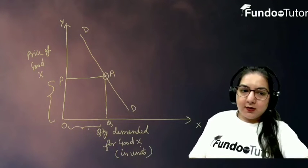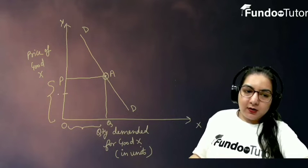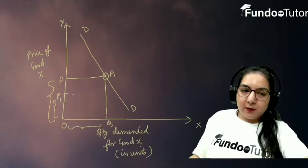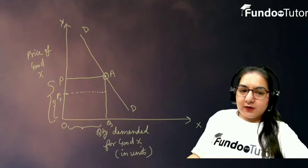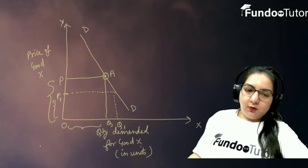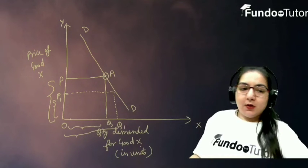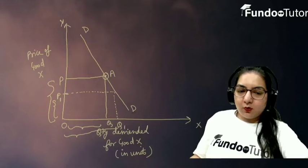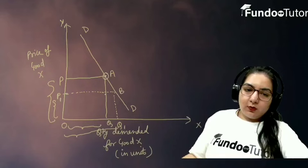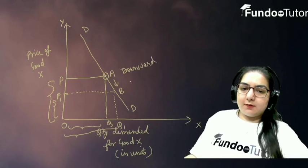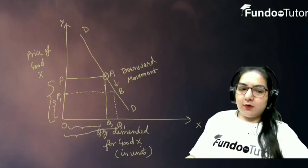Let's suppose the price decreases. Price decrease हो गया, तो मुझे P से थोड़ा नीचे mark करना होगा price — let's suppose P1. So now the price is OP1. इस OP1 price पर quantity demanded कितनी होगी? Price को आप demand curve की तरफ extend कर दोगे, और demand curve से आप ऐसे नीचे x-axis की तरफ — यहाँ पर हमें OQ1 quantity demand आ गई. मतलब when the price decreases to OP1, then the consumer increases its quantity from OQ to OQ1. The consumer has moved to point B. अब consumer point A से point B की तरफ आ चुका है. This is called downward movement along the same demand curve, and it happens under expansion of demand or extension of demand.